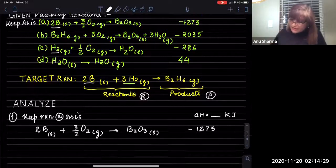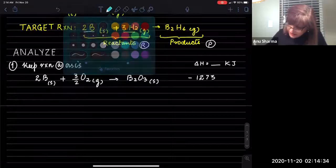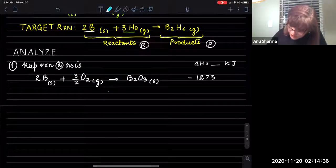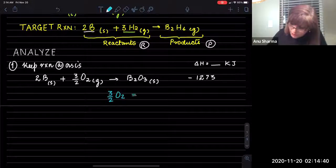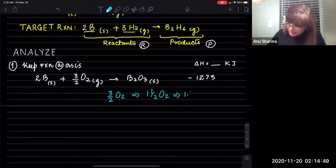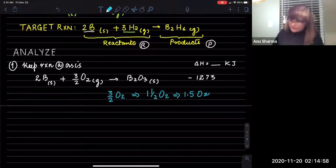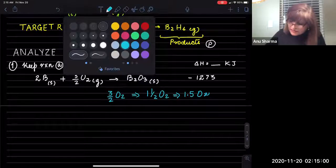Here's something else you also have to keep in mind. What does 3/2 O₂ mean? Three over two O₂ means one and a half O₂ — that is also 1.5 O₂. This is how you interpret these fractional coefficients.